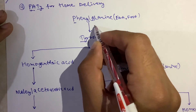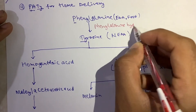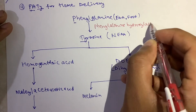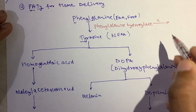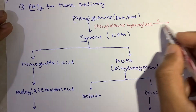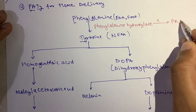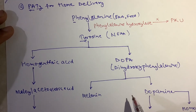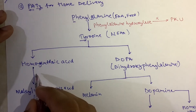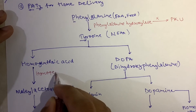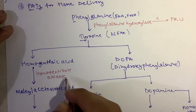Firstly, when phenylalanine gets converted into tyrosine, the enzyme involved is phenylalanine hydroxylase. The clinical significance is that deficiency of this enzyme results in a condition known as phenylketonuria (PKU).